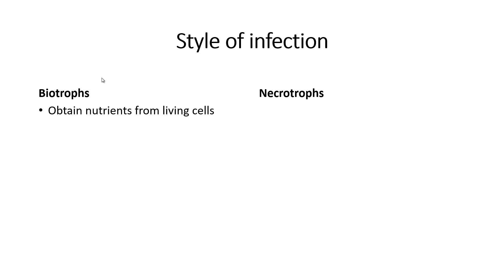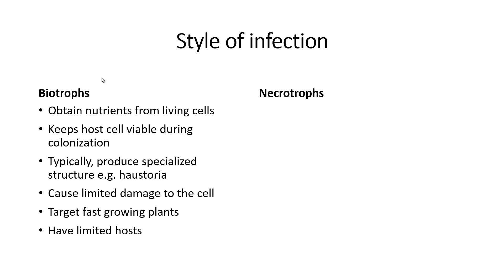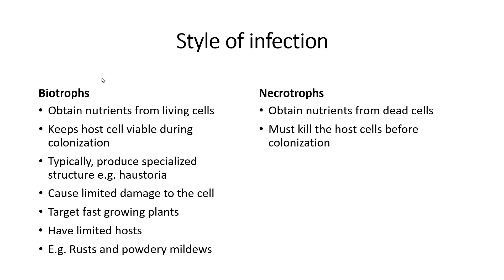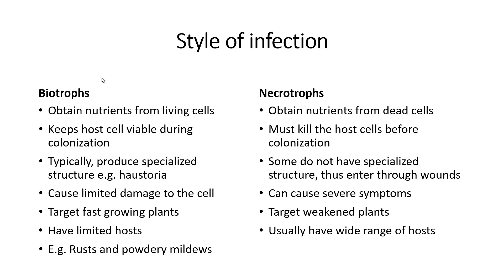Style of infection: during the colonization phase, the pathogen acts either as a biotroph or a necrotroph. Biotrophs obtain their nutrients from living cells and therefore keep the host viable during colonization. They typically produce specialized structures such as haustoria, cause limited damage to the cell, target fast-growing plants, and have a limited host range — for example, rust and powdery mildews. Necrotrophs obtain their nutrients from dead cells and must kill the host before they colonize. Some do not have specialized structures and enter the host through wounds. They can cause severe symptoms, target weakened plants, and usually have a wide range of hosts — for example, blight and damping off.